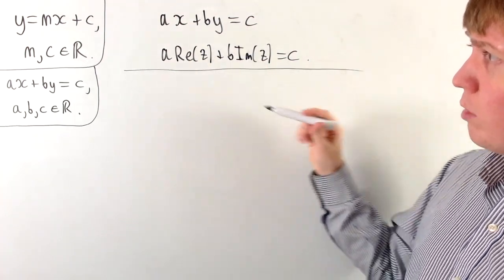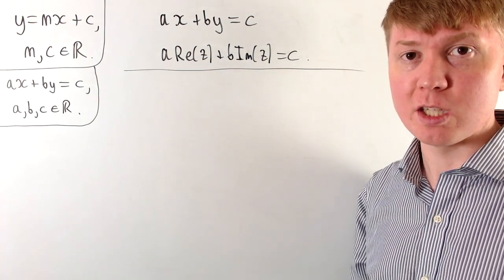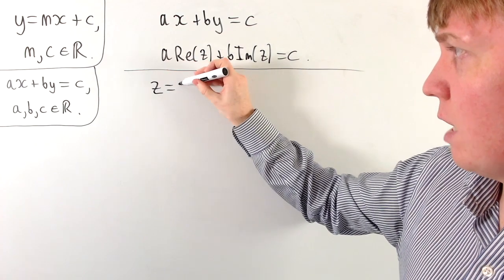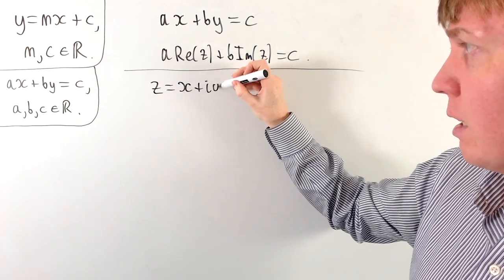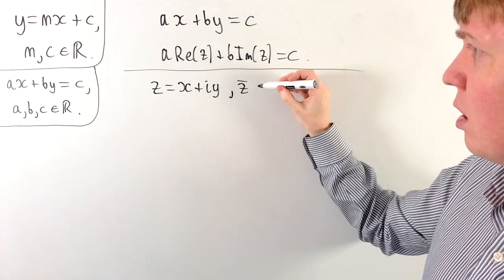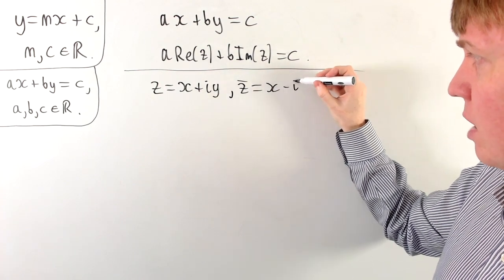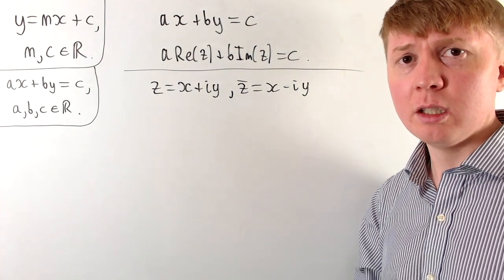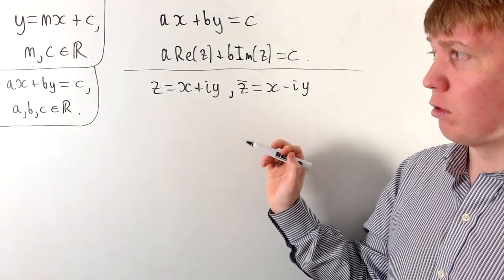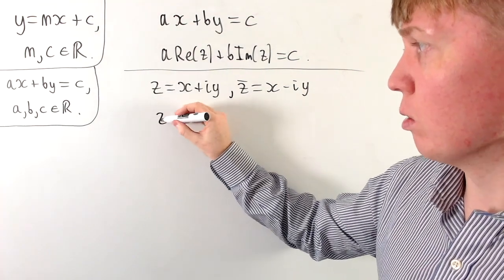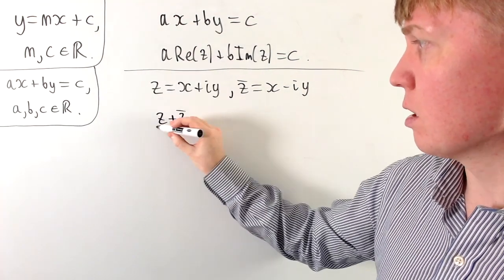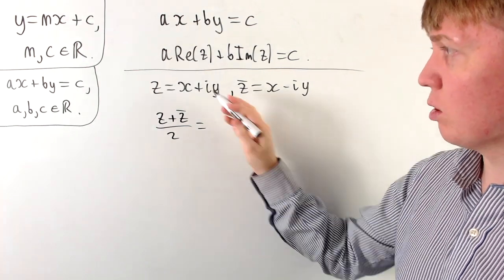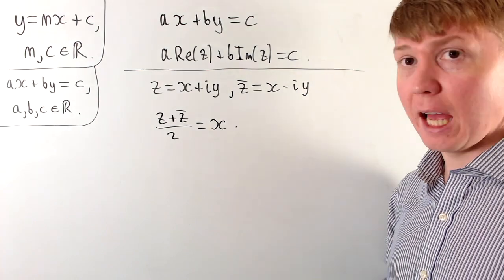There's a nice way of expressing the real and imaginary parts of a complex number z in terms of its complex conjugate. If z equals x plus i times y, then its complex conjugate is x minus i times y, where x and y are both real. If we add these two together and divide by two, the i·y terms cancel and we get just x. So z plus z̄ divided by two gives us the real part, x.